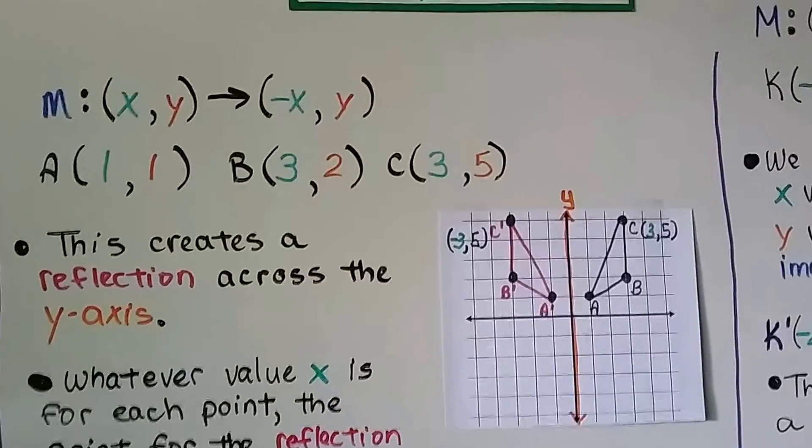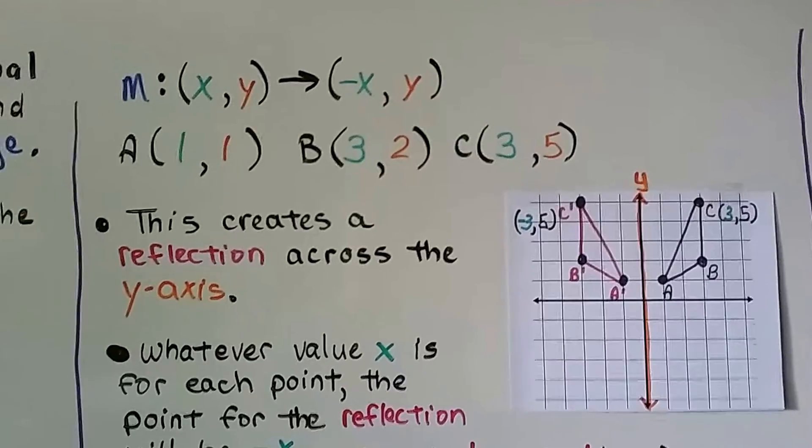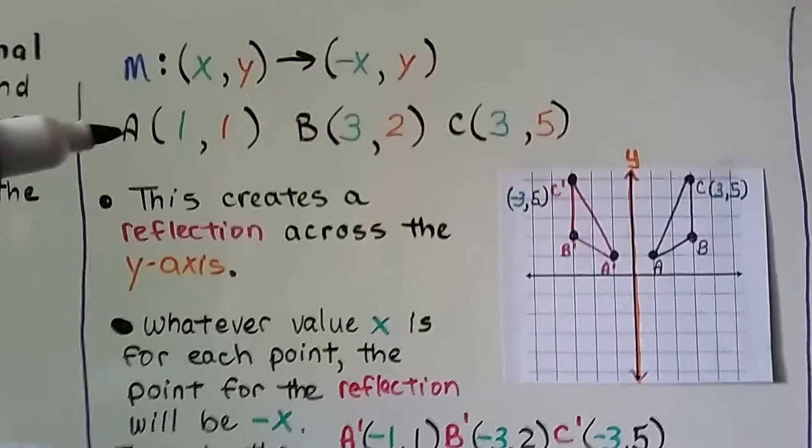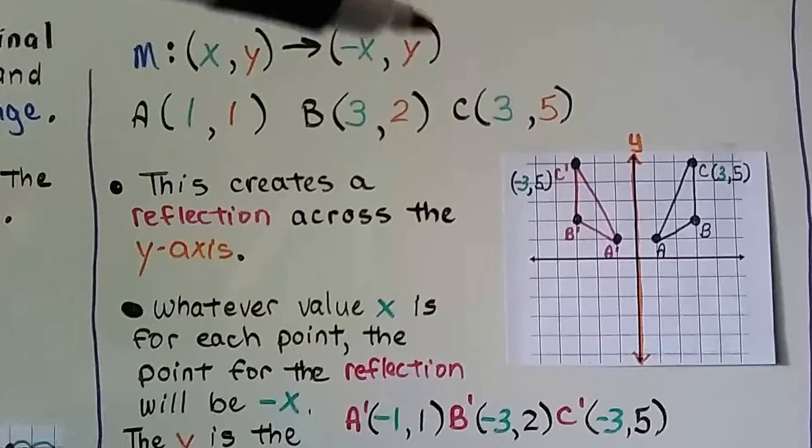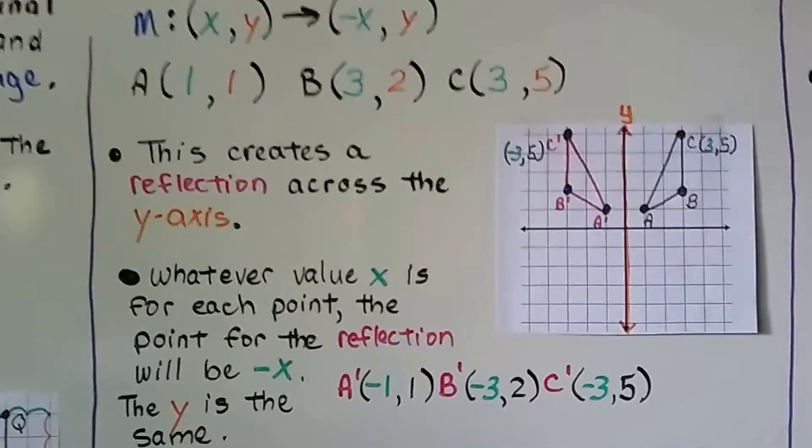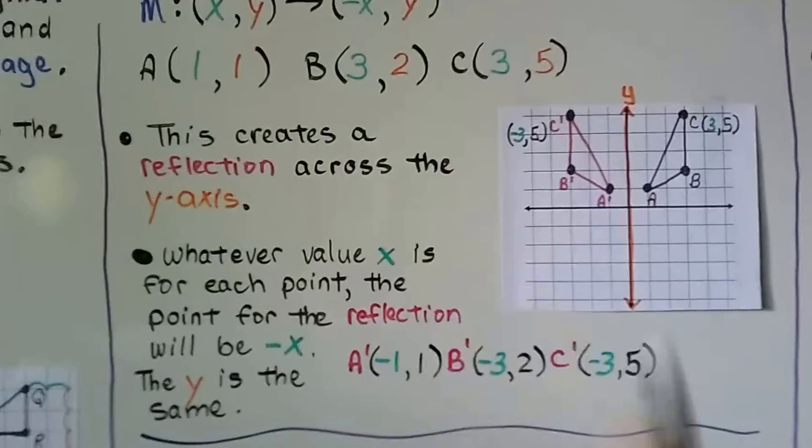We've got transformation M. Our (x, y) is going to map to (-x, y). So here's our points A, B, C. And what's going to happen is we're going to do a negative x, and then y is going to stay the same. This creates a reflection across the y-axis.